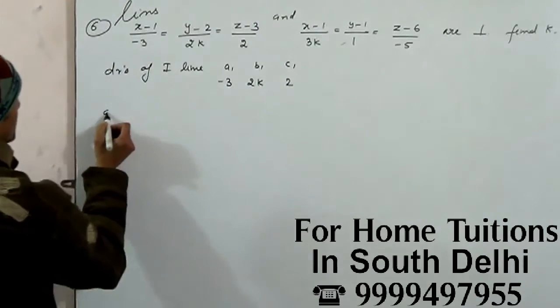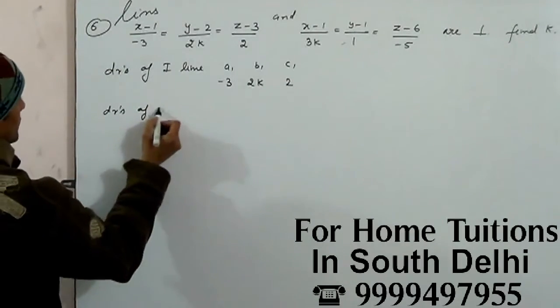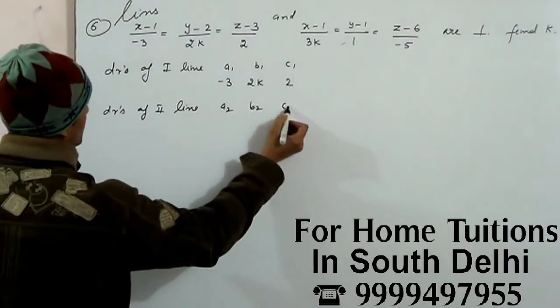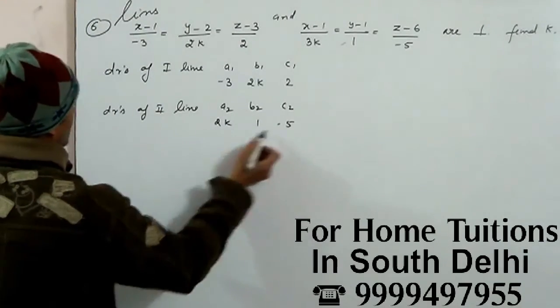Direction ratio of second line, A2, B2, C2, 3K, 1, minus 5.